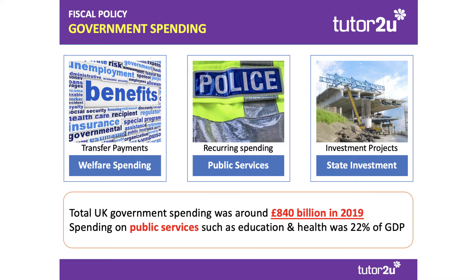The second category is public services, and this is sometimes called current spending or recurring spending. For example, the police force — we'll look at some examples of that in a moment.